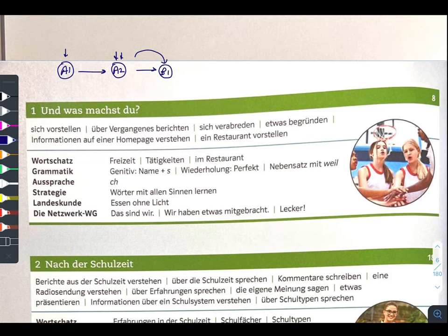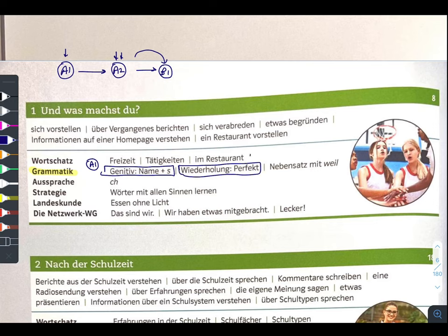I will give you an example. Here in chapter number one, Grammatik — what we are going to learn? Genitive: name plus S. This we already did in A1, it's a very small topic. Now in A2 we are going to go further. Again, Wiederholung — Perfect. We did Perfect in A1 chapter number 7, and again we are going to do it in A2. In A1 chapter 7, I told you this Perfect topic is very important in German language and also from exam point of view. That's why in chapter number 1 of A2 they put Perfect.